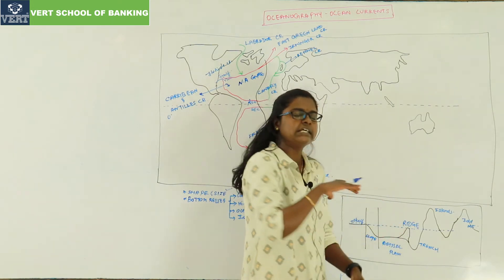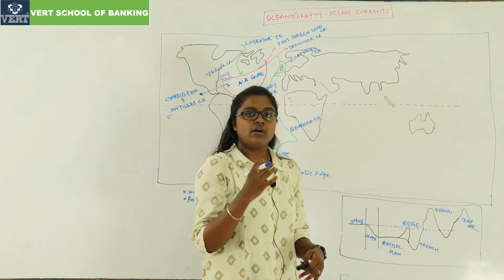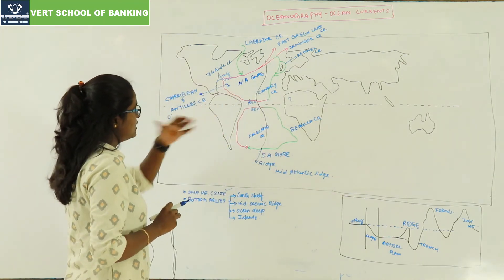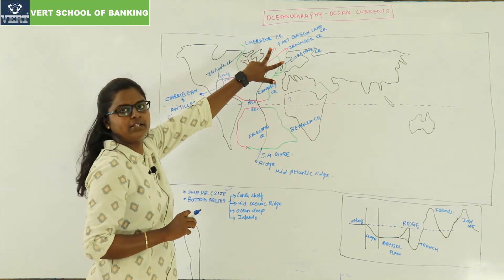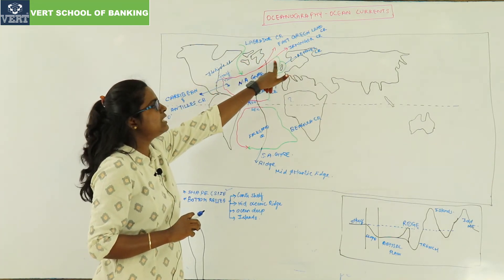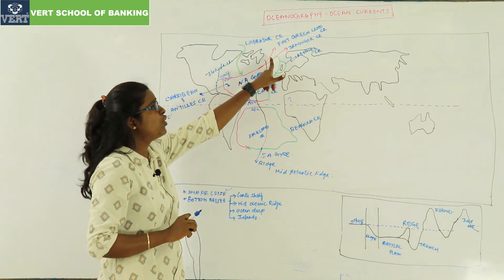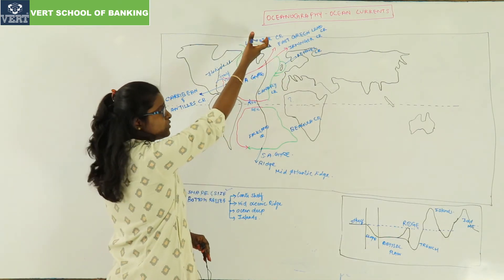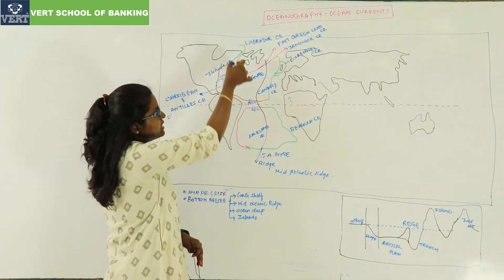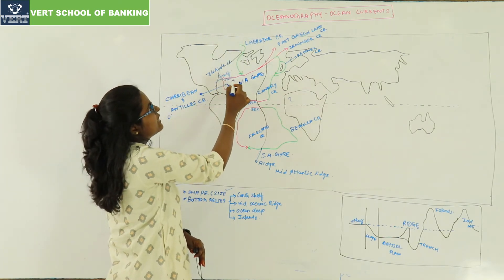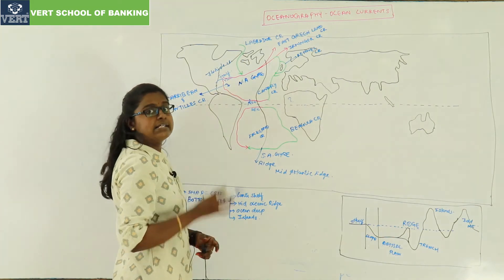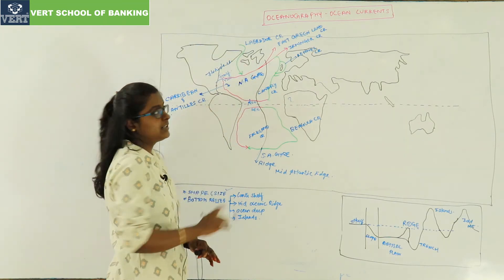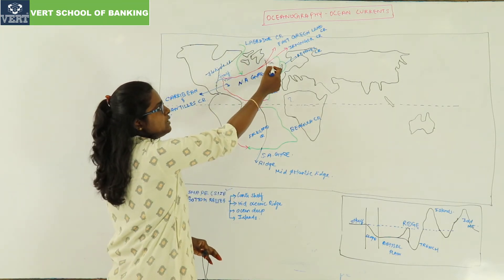Due to ridge deflection, the current splits into two: the East Greenland current and the Irminger current — both warm ocean currents. The Labrador current travels from the poles towards the equator and joins the Gulf Stream. After the Gulf Stream joins, the warm current moving towards the north becomes the East Greenland current and Irminger current, which are again deflected.